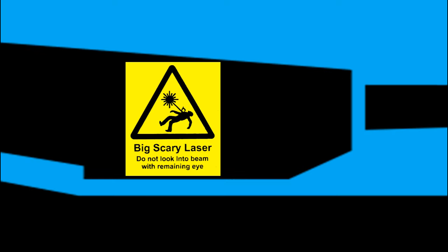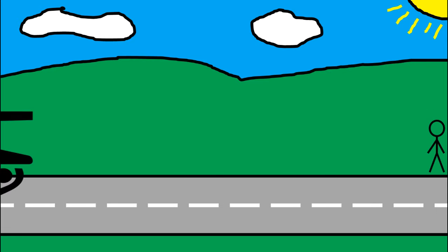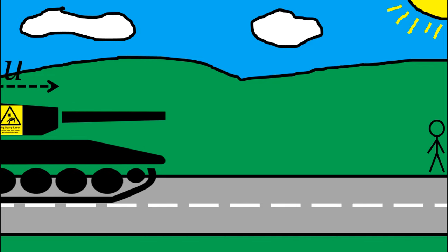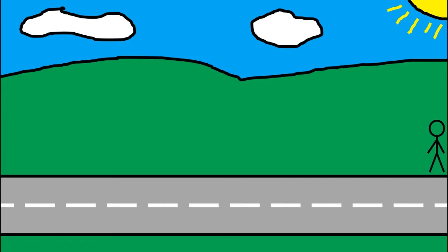Our tank's gun has now been upgraded to a big scary laser. Again, when the laser fires, the light travels at velocity C, the speed of light relative to the tank. However, from our observer on the ground, the speed observed is not U plus C, it is still just C. Think about that for a few seconds.